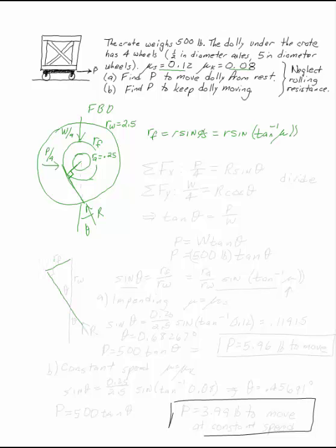So if we blow that up again, here's my friction circle radius. Vertical comes down at theta. This is the radius of the wheel. That would be right here at this dotted line. Here's my reaction force R. If this is theta, then so is this theta. And I can say something useful like sin theta is rf over rw.